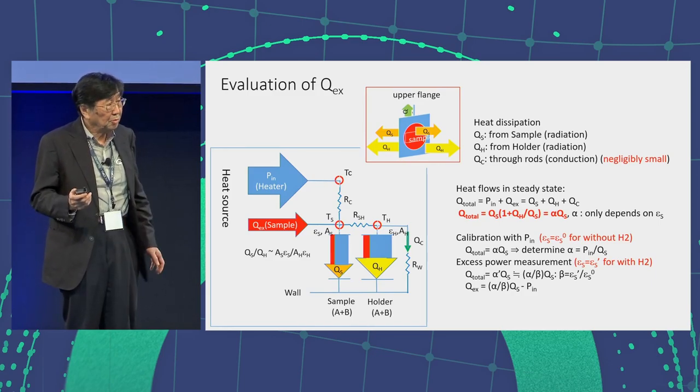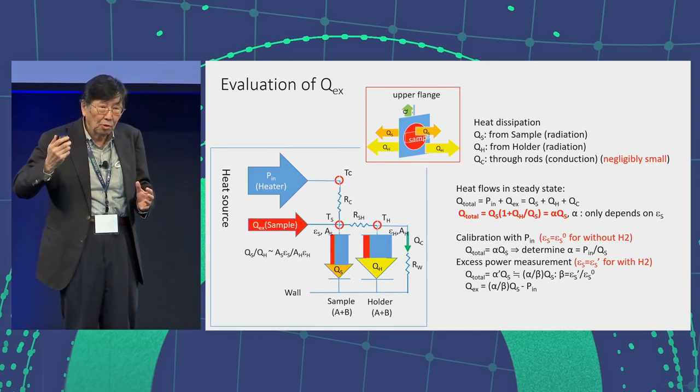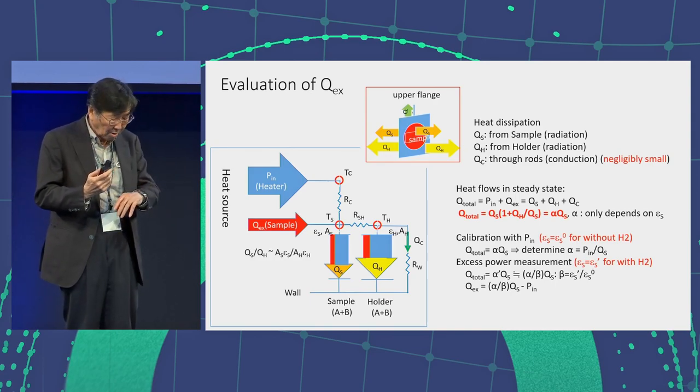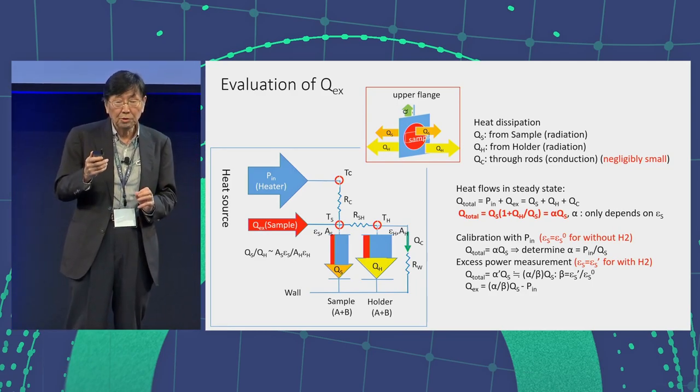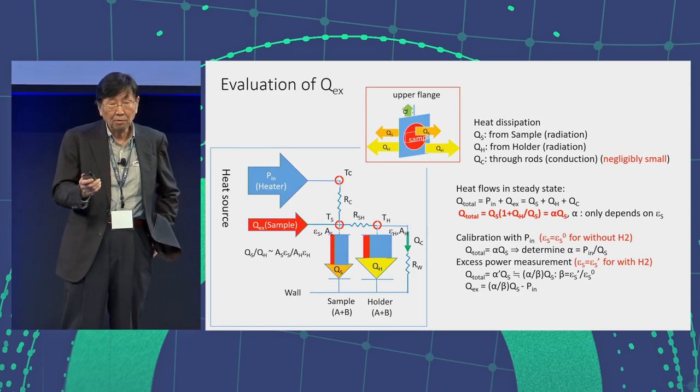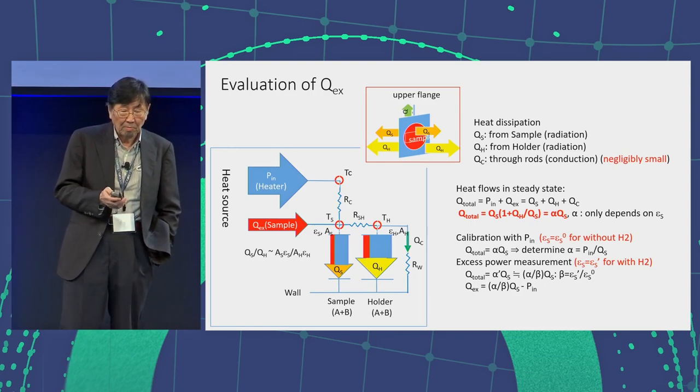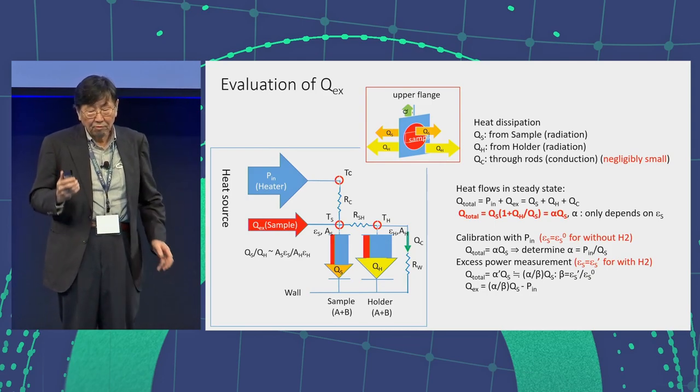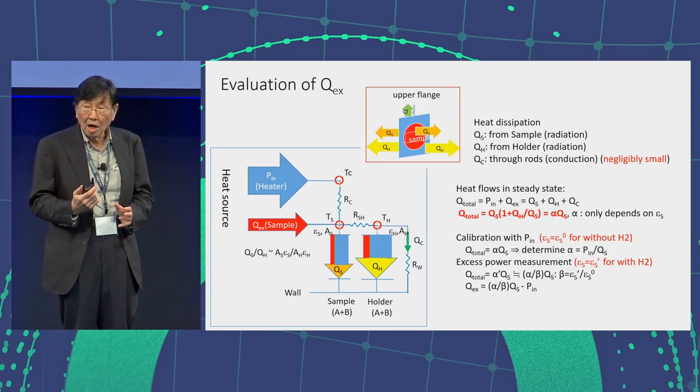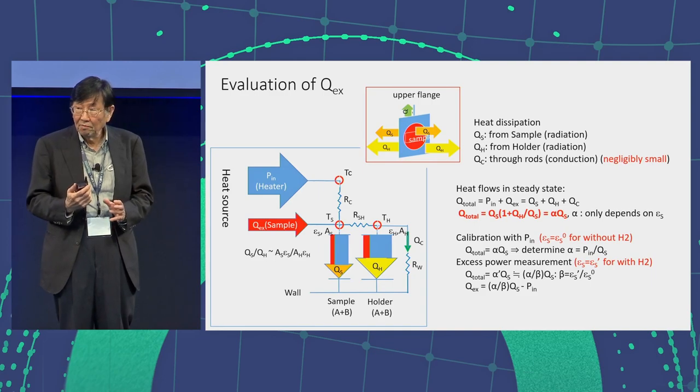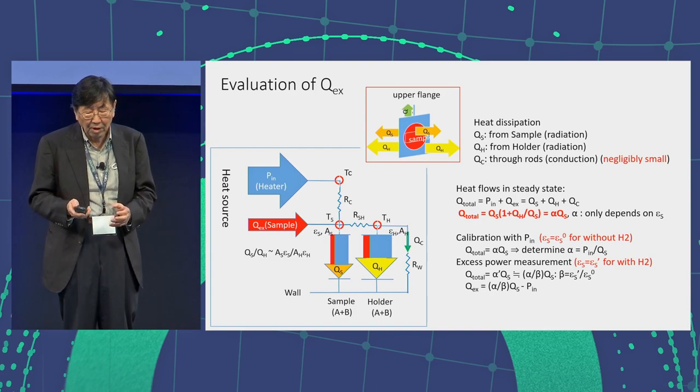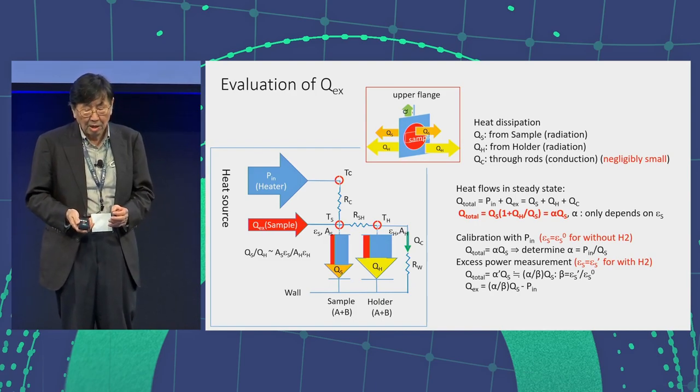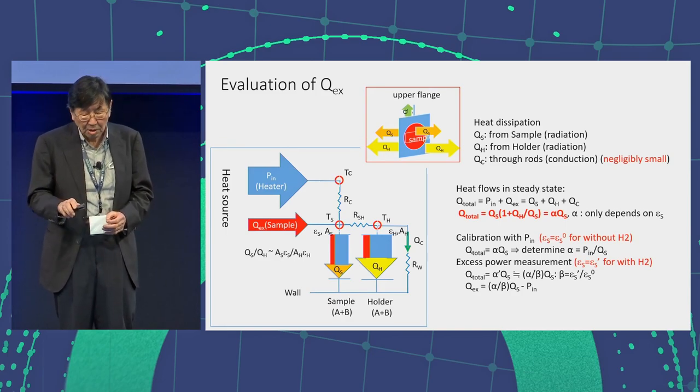If the excess power, if we introduce the hydrogen in the system, and if the emissivity is not changed, we can use this equation for the calculation. But actually, if we introduce the hydrogen, the emissivity of the sample is a little bit changed, 10% change. We can modify it a little bit. We did it, and the final formula is written at the last line.